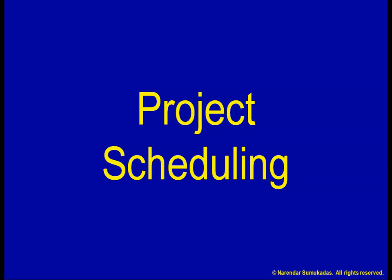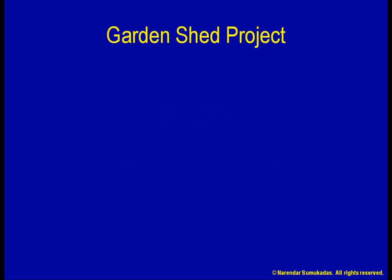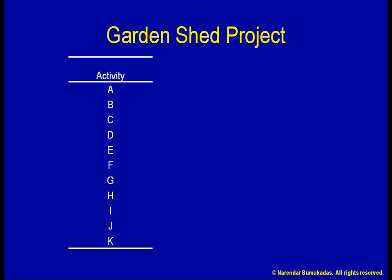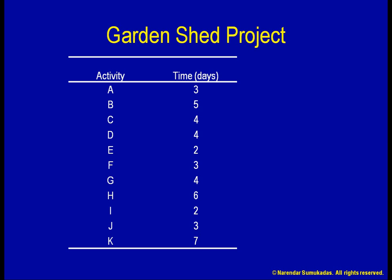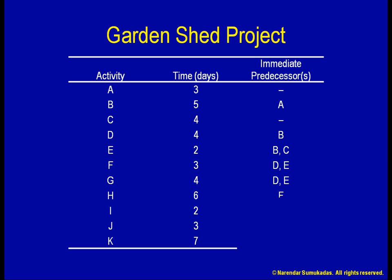Consider the following example. Suppose I am looking to construct a garden shed in my backyard. I identify all the different activities that need to be conducted, then estimate the time required for each. There is a total of 43 days worth of work involved. Further, I express the interdependencies among these activities in terms of each activity's immediate predecessor — that is, the preceding activity that must be completed before each activity can proceed.